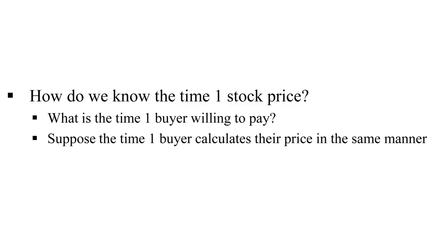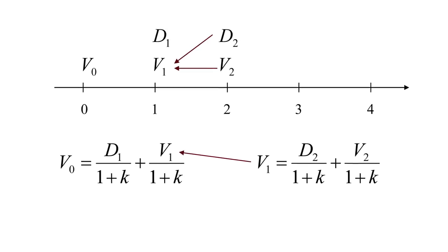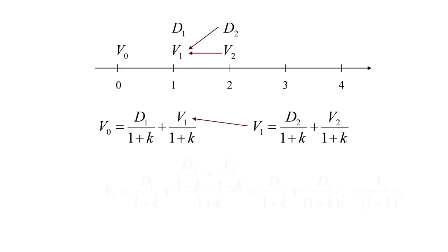That is, they calculate the present value of the dividend the next year, plus their selling price that they would receive the next year. So we'll show that on the timeline here. The time one buyer, who is going to pay V1, will be getting the present value of D2 plus the present value of V2. So we'll just make that substitution.